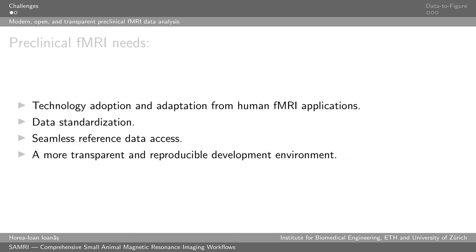The core challenges of preclinical fMRI include technology adoption from human fMRI. This is a counterintuitive thing, but due to the history of the method, human fMRI applications have a significantly broader range than preclinical applications, meaning that there is a lot of know-how which can be integrated into animal research simply by transferring it.